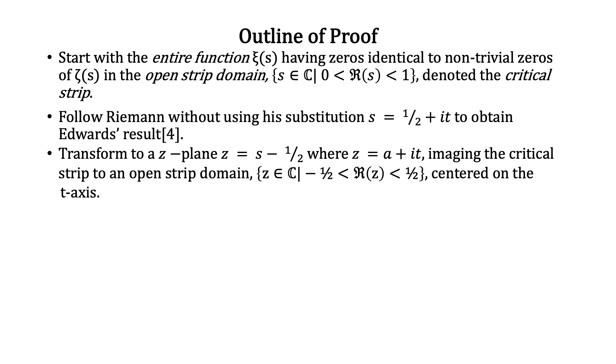Transform to a z-plane z = s - 1/2, where z = a + it, imaging the critical strip to an open strip domain centered on the t-axis.